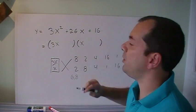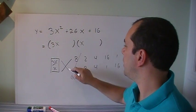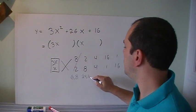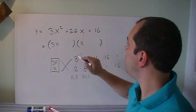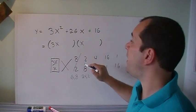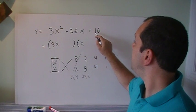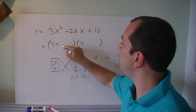With 6 and 8, can I make 26? No, that's not good. 24 and 2. Because I'm multiplying them. 24 and 2, can I make 26? Actually, I can if I add them. Also, this is positive, and this is positive, so I know that both numbers are going to be plus.